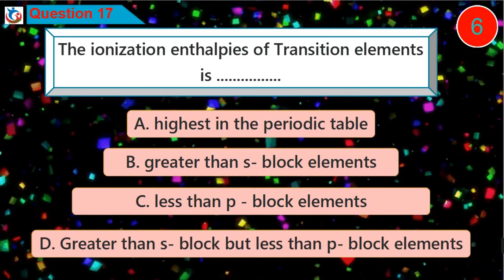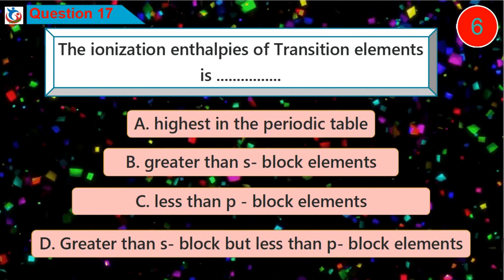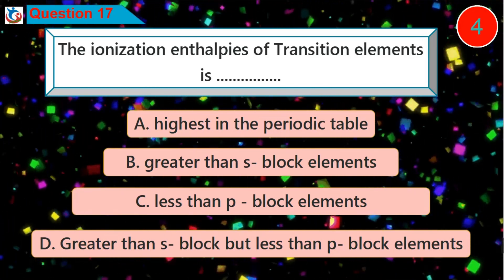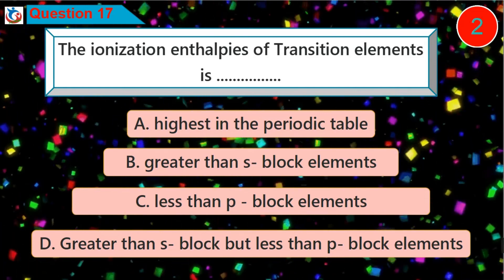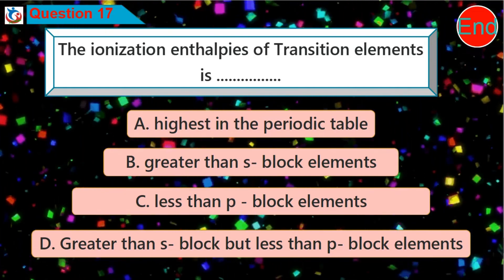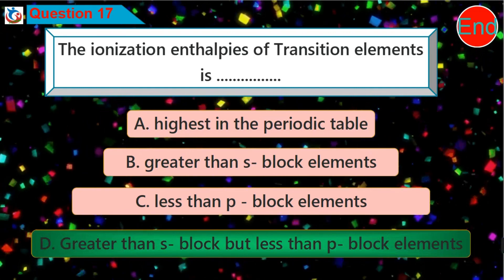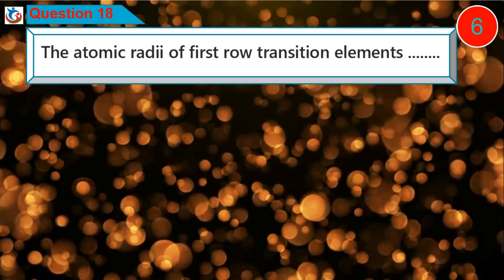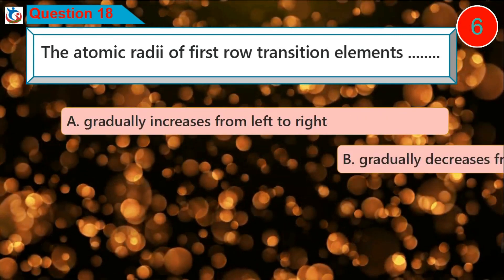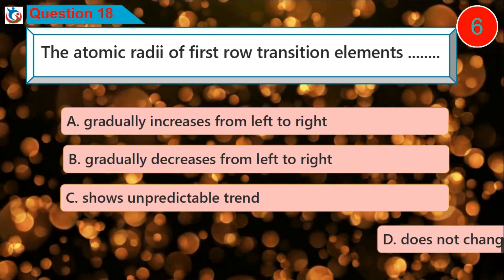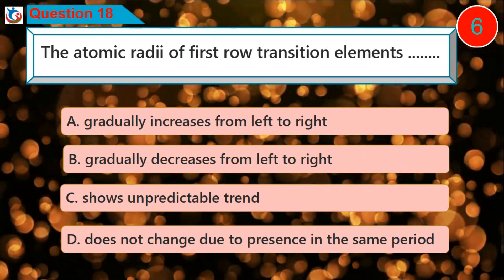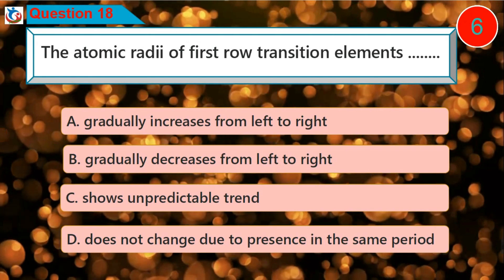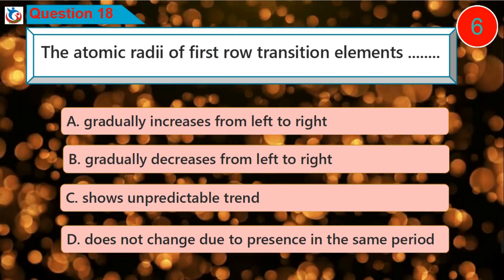Question 18: The atomic radii of first row transition elements — A. Gradually increases from left to right, B. Gradually decreases from left to right, C. Shows unpredictable trend, D. Does not change due to presence in the same period.